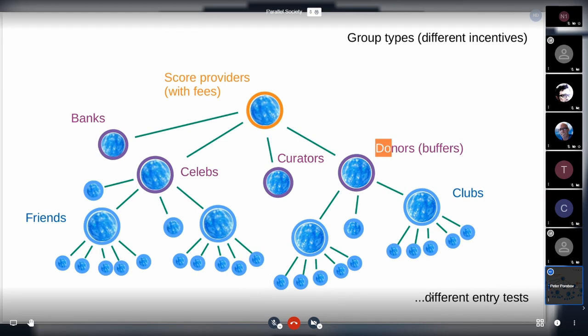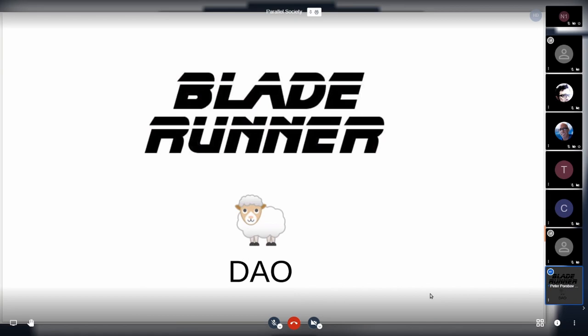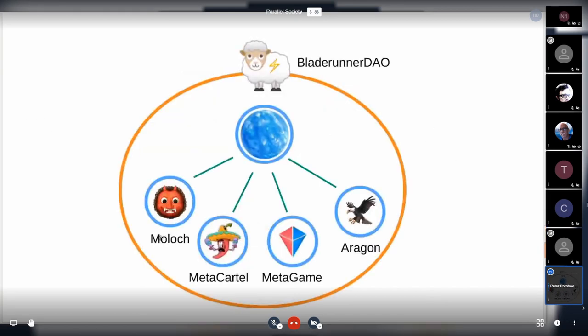Here comes our first MVP which will bring DAO members to Upala, which will provide an entry test based on membership in DAOs. We call this Blade Runner DAO. What Blade Runner DAO does is it just fetches the existing members and assigns a score to them. We hope this will be the first identity system based on Upala protocol.